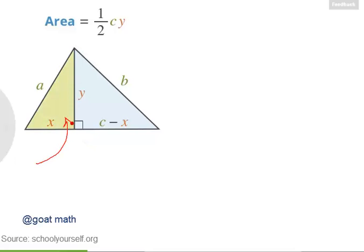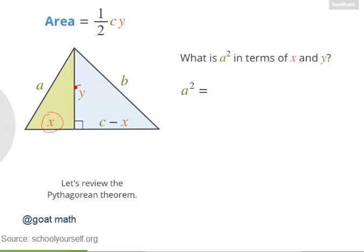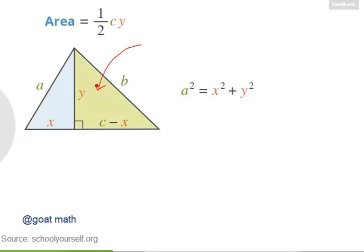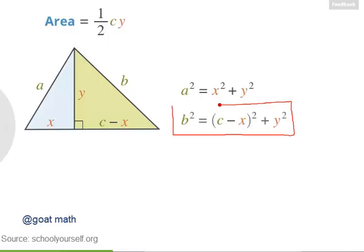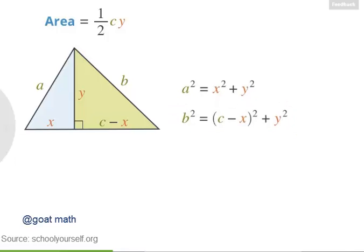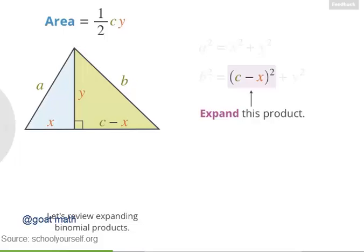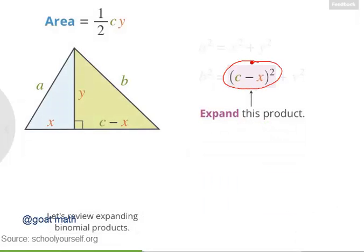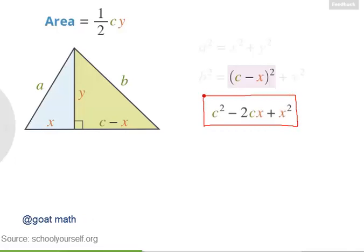Now let's see if we can rewrite x and y in terms of the side lengths a, b, and c. First, take a look at this right triangle. By the Pythagorean theorem, a squared equals x squared plus y squared. Next, looking at the other right triangle and applying the Pythagorean theorem, b squared equals c minus x squared plus y squared. Expanding c minus x squared gives us c squared minus 2cx plus x squared.